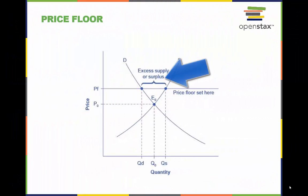This model shows the impact of a price floor on a market. The intersection of demand D and supply S would be at the equilibrium point EO.